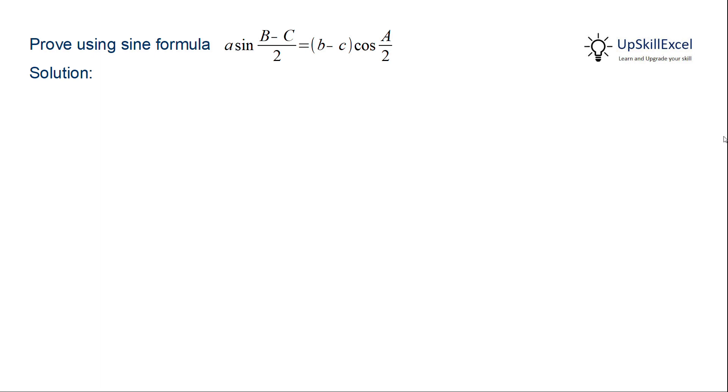Prove using sine formula: a sin((B-C)/2) = (b-c)cos(A/2).